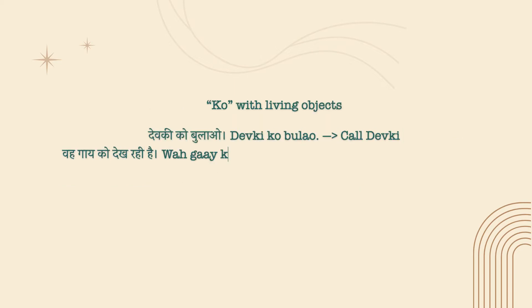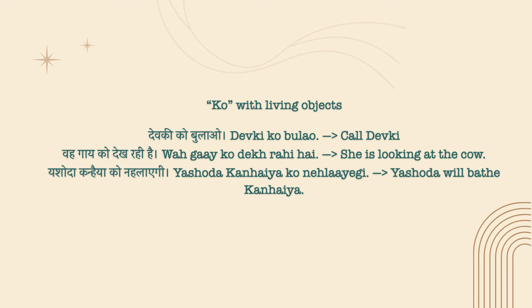Ko is used with living objects. For example: 'Devki ko bulav' — Call Devki. 'Wah gaay ko dekh rahi hai' — She is looking at the cow. 'Yashoda kanhaiya ko nehlayegi' — Yashoda will bathe Kanhaiya.